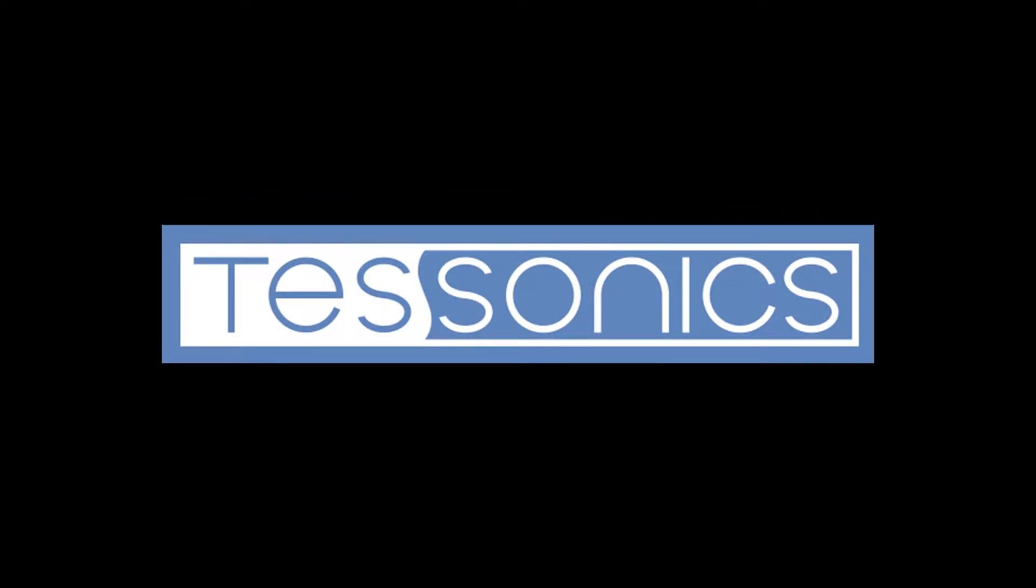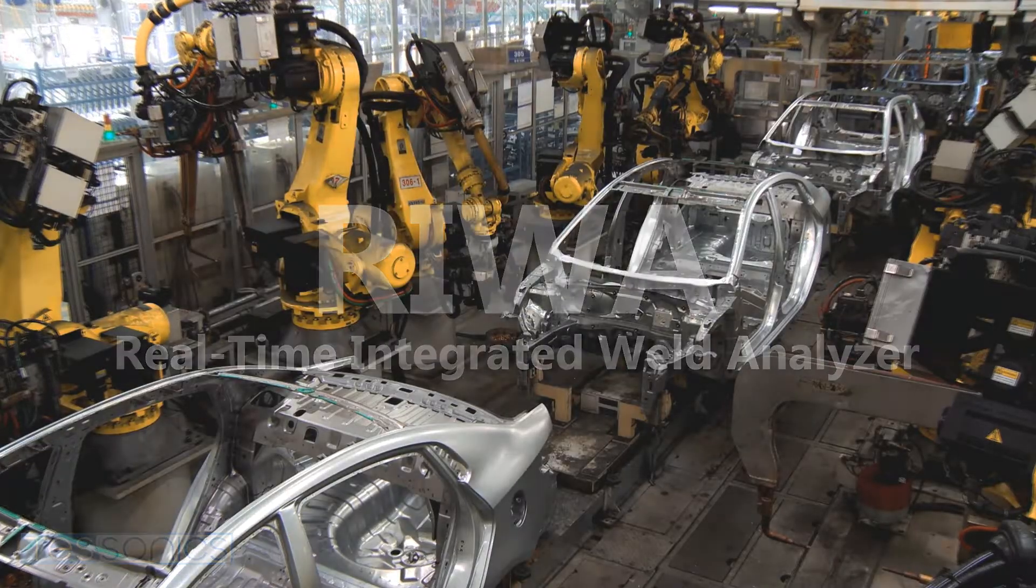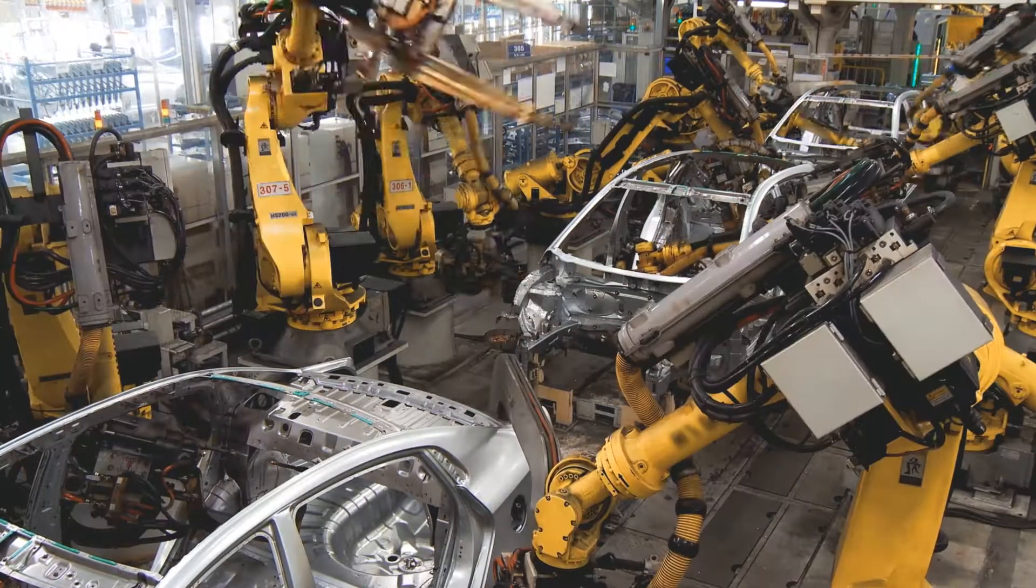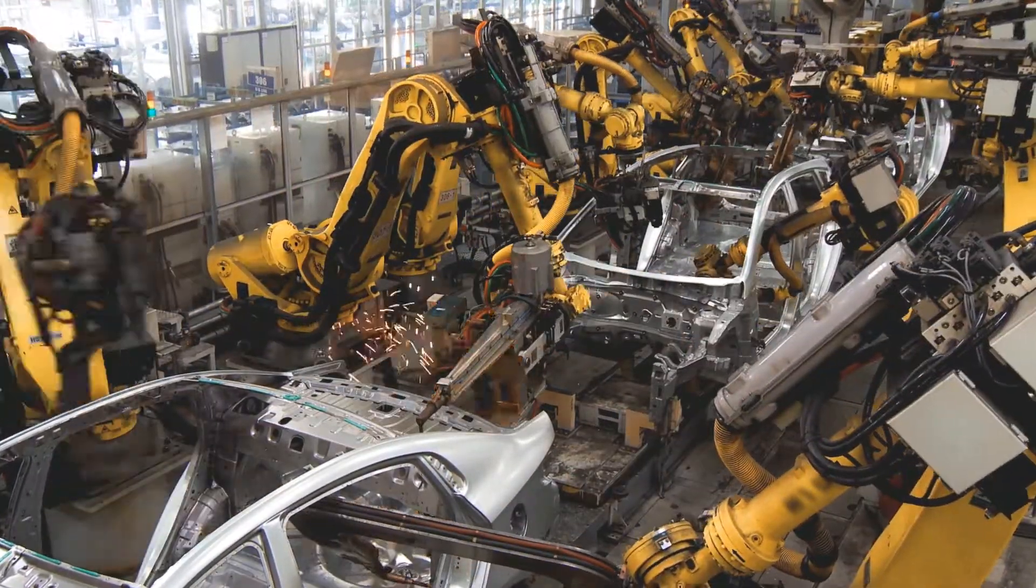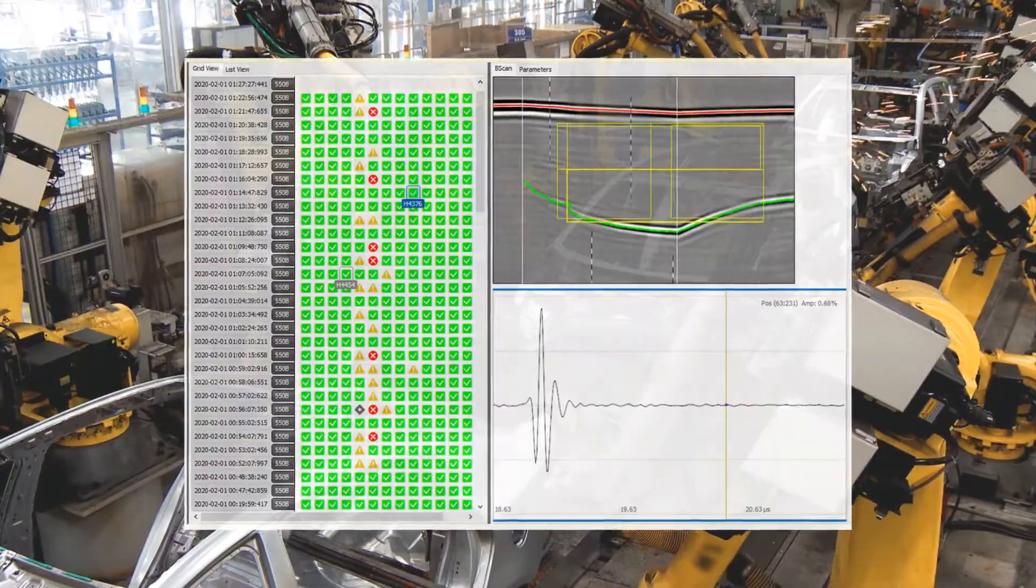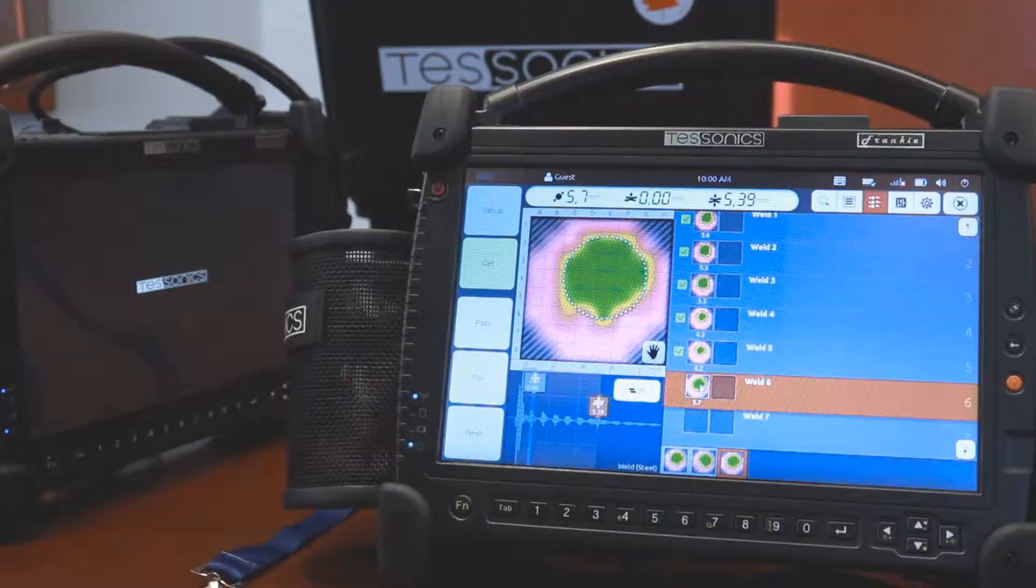Tessonix is pleased to announce our newest product. The average car body contains around 5,000 spot welds. The integrity of these welds is of extreme importance. The quickest and most effective way to analyze the quality of these welds is through the use of ultrasonic testing.